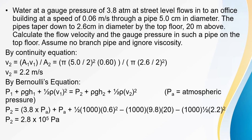Applying Bernoulli's principle: p₁ + ½ρv₁² + ρgh₁ = p₂ + ½ρv₂² + ρgh₂. The gauge pressure at street level p₁ = 3.8 atmospheres. Substituting all values — density of water, velocities, and height difference of 20 m — and simplifying, the gauge pressure at the top floor is 2.8 × 10⁵ pascal.